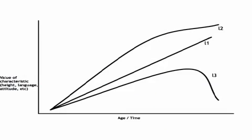So here we have a characteristic — for example, it could be height or language or attitude — and we see how these characteristics change with age or with time. We see that different individuals have different ways of changing with age or time. And we are interested in how these variabilities between individuals can be related to background variables such as social class, family income, and so on — in the same kind of way that we thought about the educational attainment example.